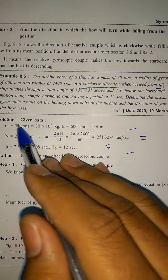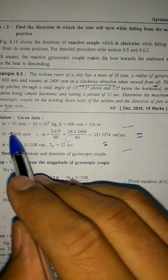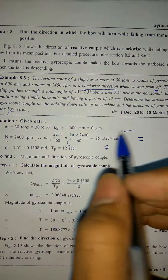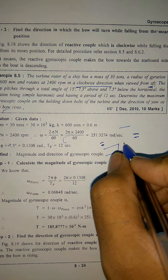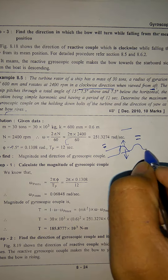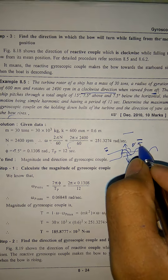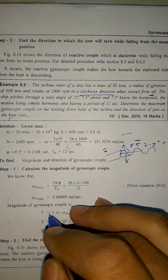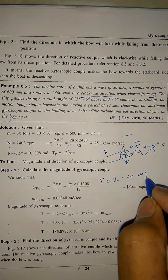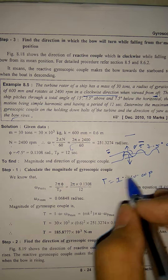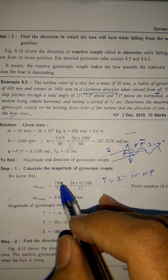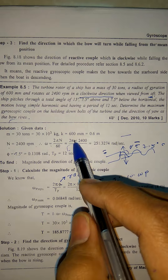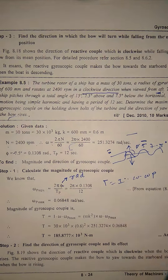Looking at the given data: mass was given in tons, we convert it to kg. K (radius of gyration) is given, N is given, and from N you can calculate omega — that is the angular velocity in radians per second. Phi is given. The ship rises 7.5 above and 7.5 below, so assume simple harmonic motion and take phi as 7.5 degrees. Now calculate two terms: omega_P and T. T equals I times omega times omega_P. I can be found as mk-squared. Omega has been found, so omega_P max equals 2 pi phi divided by T_P — phi should always be in radians because omega is in radians.